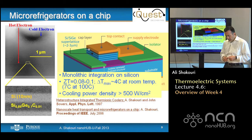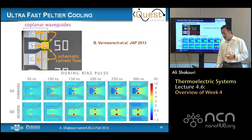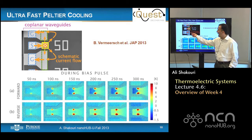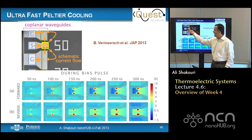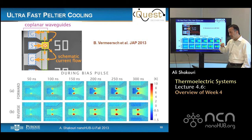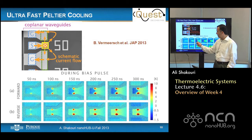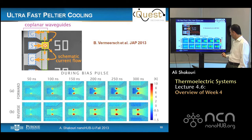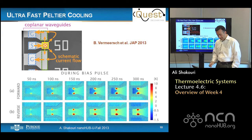One of the other things you can do when you have a very tiny refrigerator is achieve very fast cooling because the thermal mass is very small. The cooling happens at the interface of metal and semiconductor. If you use a ground-signal-ground coplanar waveguide to send the electrical signal, there is an impedance matching that avoids electrical ringing in the current. You can get cooling to happen very quickly in the first 100 to 200 nanoseconds, and you can see one to one-and-a-half degrees of cooling happening at the tiny locations.